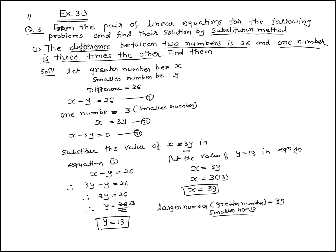Now we verify this. Verification: the difference of the two numbers is 39 minus 13, which equals 26. The bigger number equals 3 times the smaller number: 3 times 13 equals 39. This is the verification of this example. Thank you.